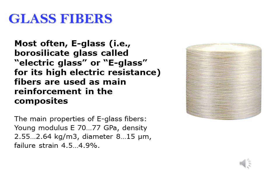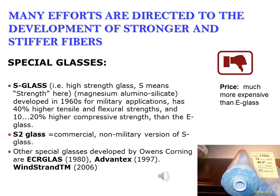Most often, E-glass fibers are used as the main reinforcement in composites. E-glass is borosilicate glass, called electric glass for its high electric resistance. Many investigations toward the development of fibers which are stronger than the usual E-glass fibers have been carried out.